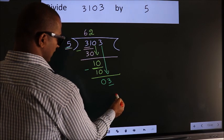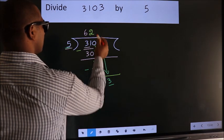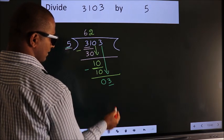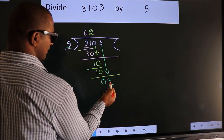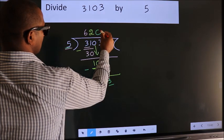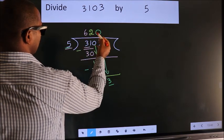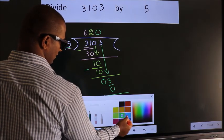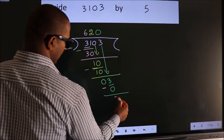If I take 1, we get 5. But 5 is larger than 3. So what we do is we take 0 here. So 5 into 0 is 0. Now we subtract, we get 3.